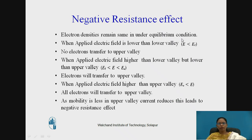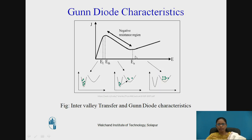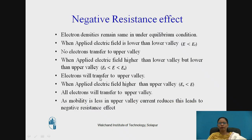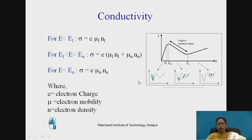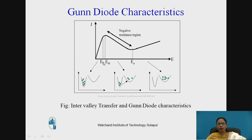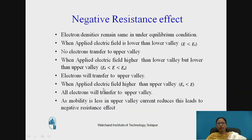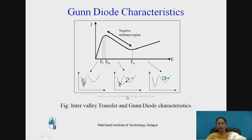The electron densities remain the same under equilibrium. When E is less than EL, no electrons transfer to the upper valley. When E is between EL and EU, electrons will start transferring to the upper valley. When E is greater than EU, all electrons transfer to the upper valley. As mobility is less in the upper valley, current reduces, leading to the negative resistance effect.